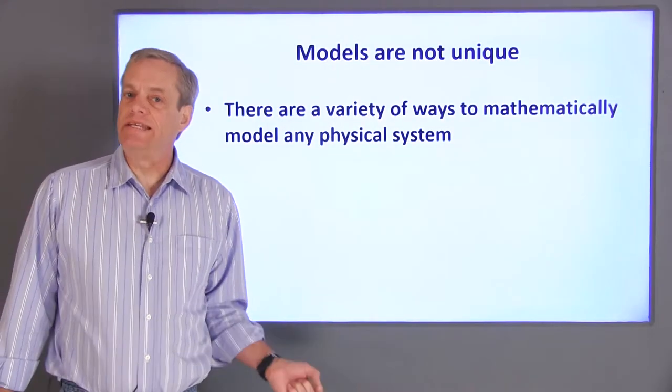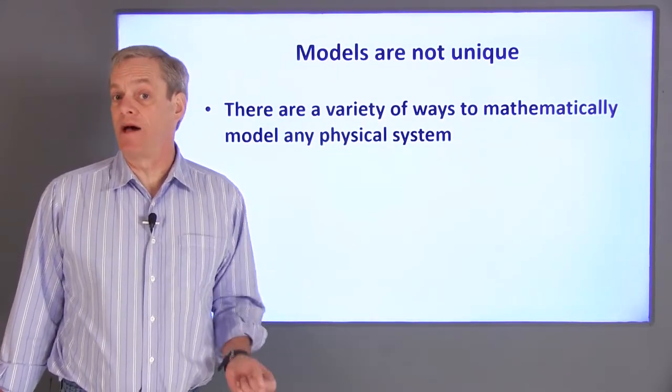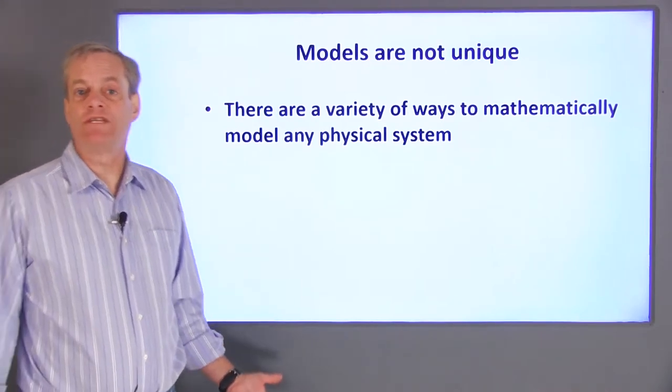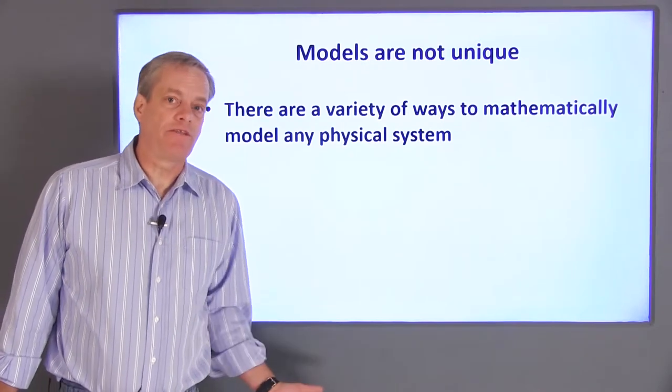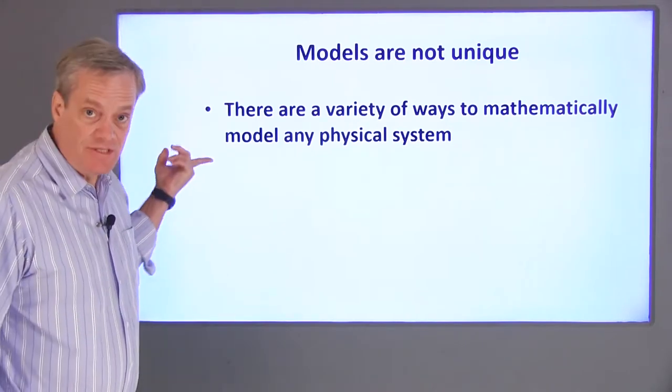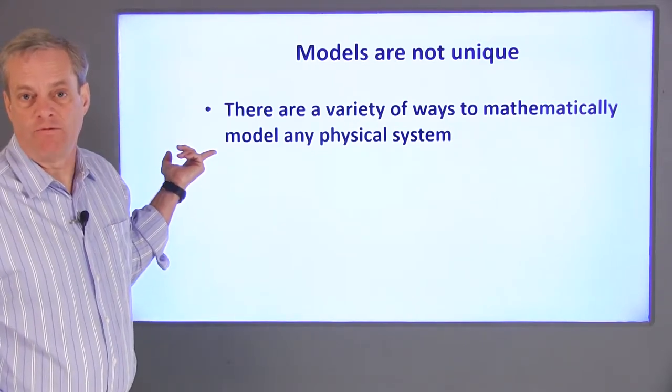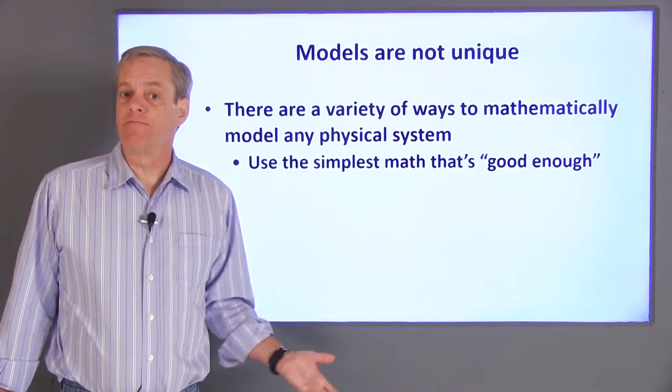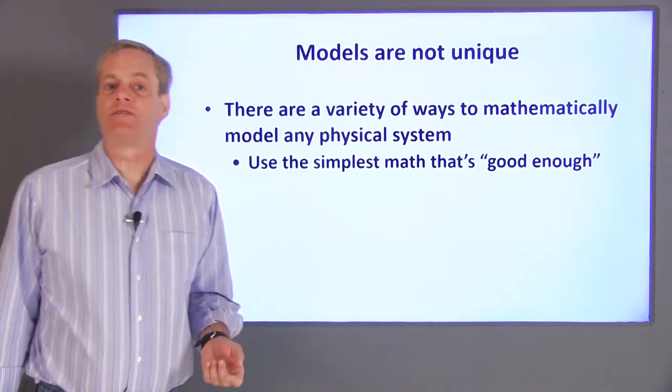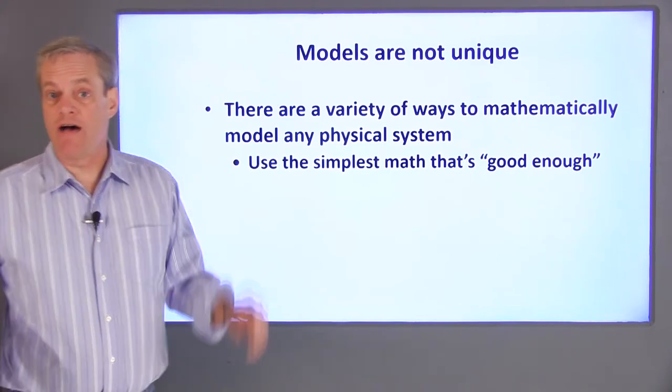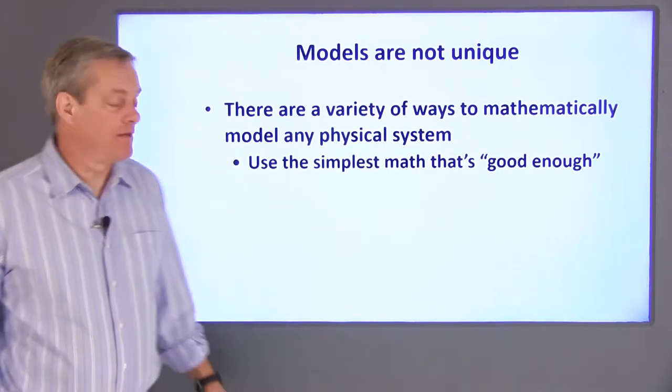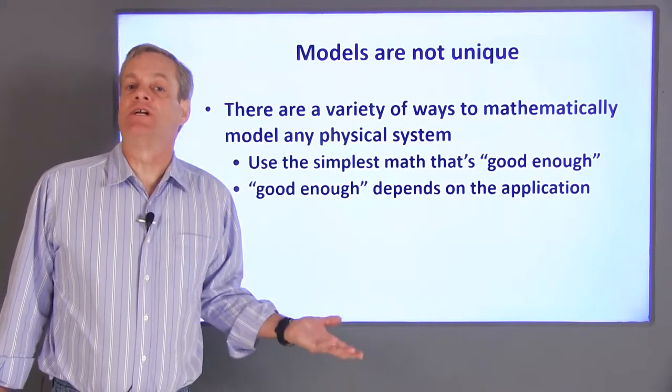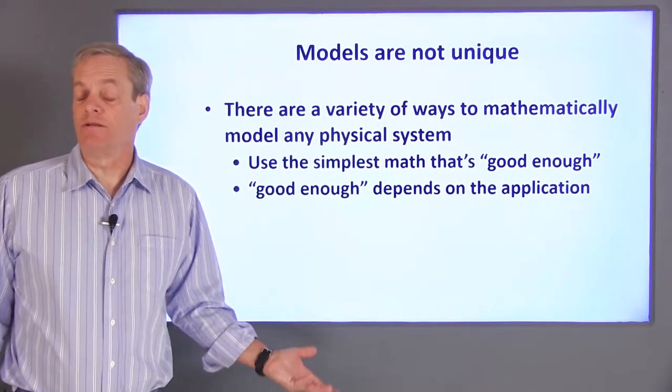Engineers always need to keep in mind that the mathematical model they use is different on some level from the actual physical system. Another way to think of this is that any physical system can be mathematically modeled in a variety of ways. Our goal is to determine the simplest mathematical model for a system that provides us with a solution that's good enough for the application at hand. An obvious problem with this is deciding what is good enough, which always depends on the problem we're solving.